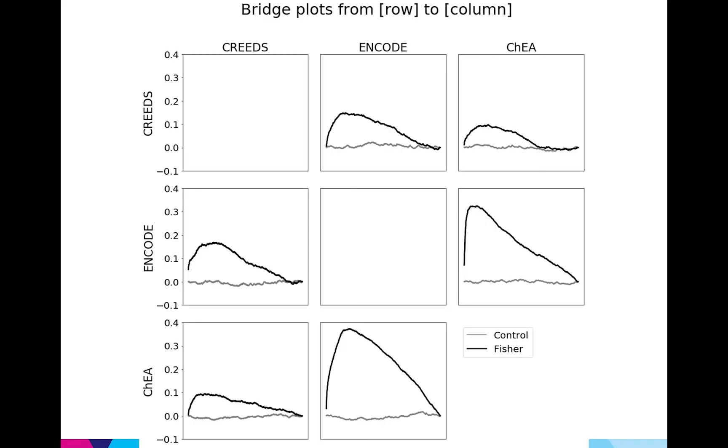So here are my results with the transcription factor to gene libraries. Again I have three so that makes six pairs between them. So here's the control and the Fisher's exact test. Already I have some form of validation because I can see that ENCODE and ChEA agree with each other the most and this makes sense because they're both chip-seq libraries while CREEDS is a microarray library.